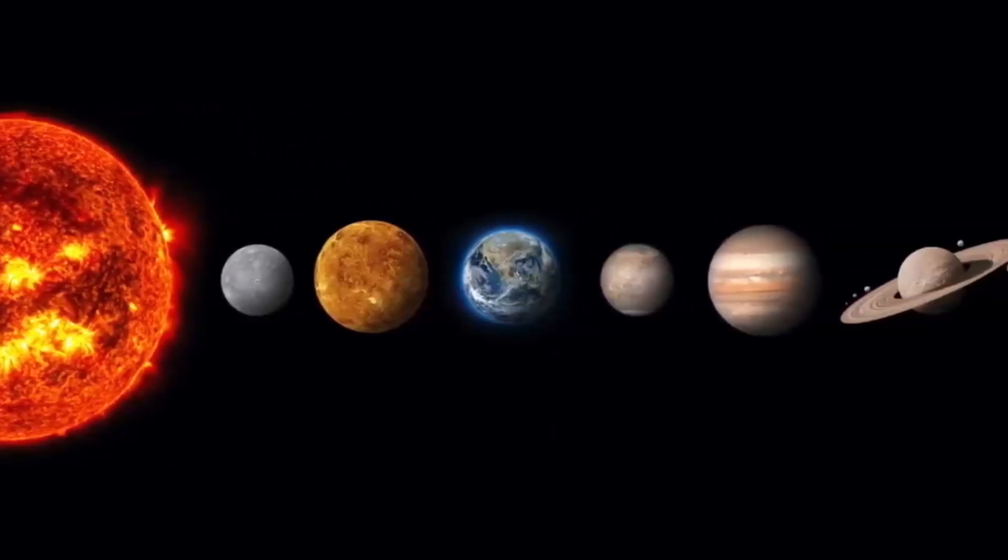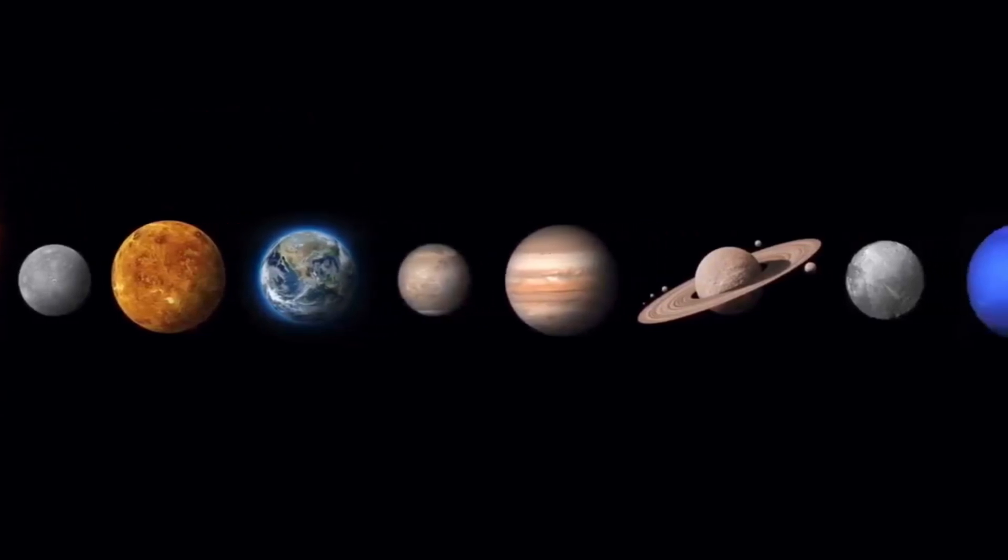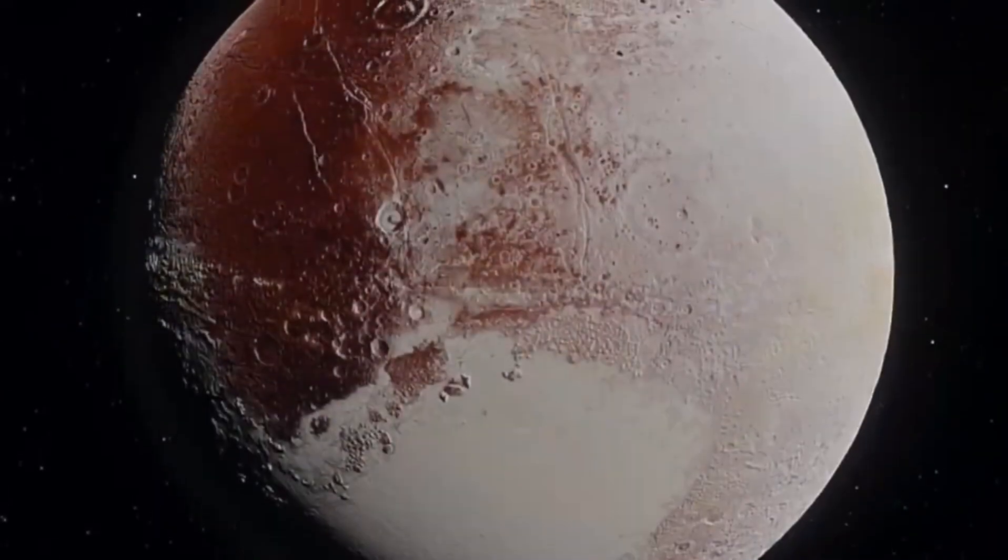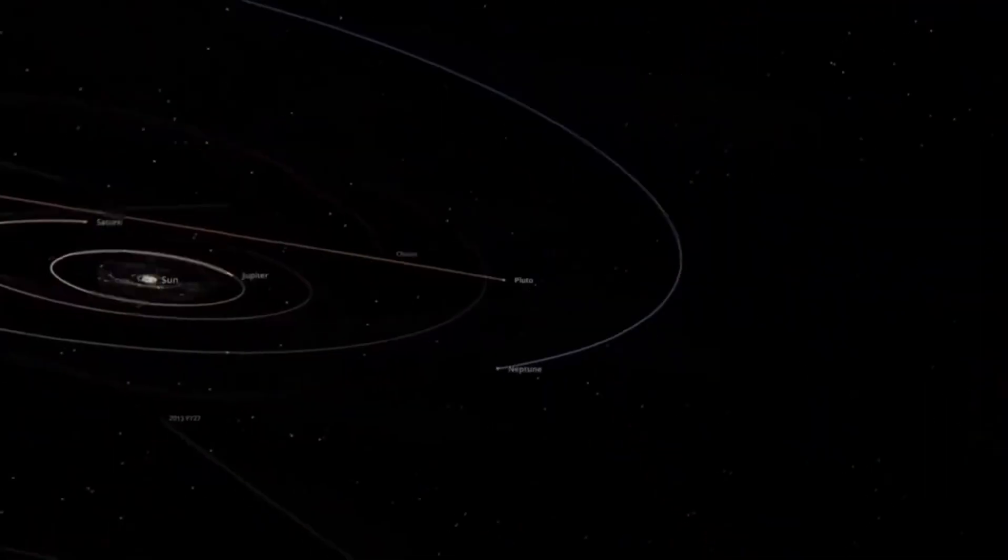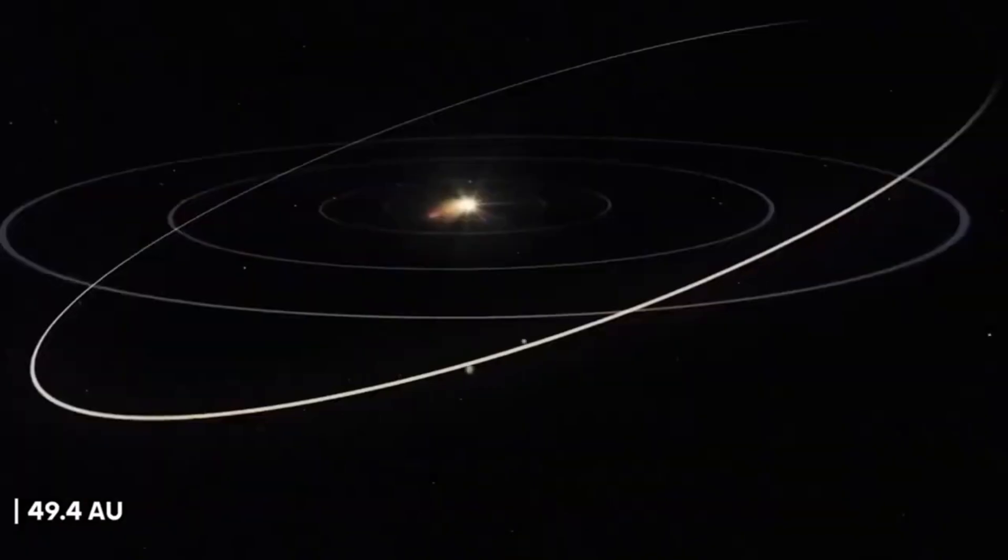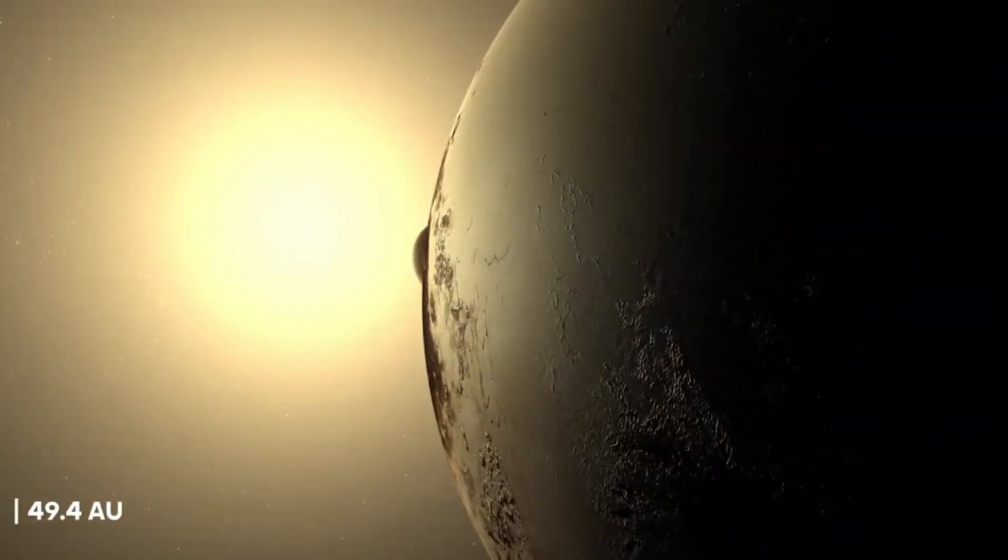Enceladus is mostly covered by water ice, but underneath there is a warm ocean. The spectacular images also show bright blue stripes that look like giant rivers. These stripes are cracks in the ice through which water is ejected into space.